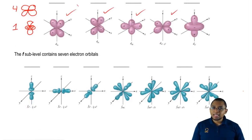Then finally, the F sublevel has seven electron orbitals, seven unique shapes, and because it has seven electron orbitals, it can hold a maximum of 14 electrons.